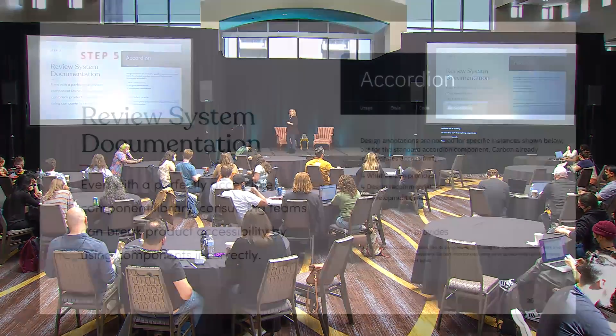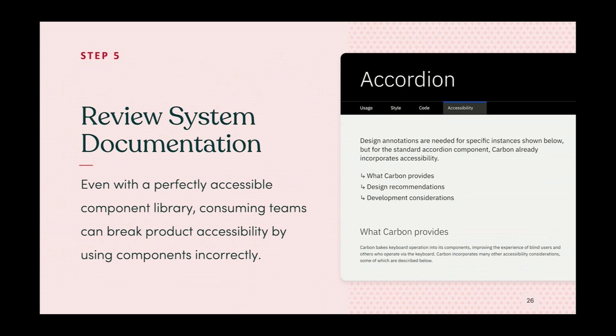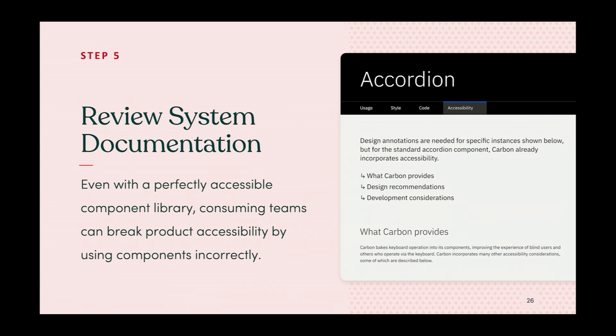Finally, review design system documentation. Even if you have a perfectly accessible system out of the box, if people don't know how to use it, they can break the accessibility of their product. Our documentation has to support people as much as possible. You can't just rely on documentation — you've got to have conversations and train people up, because a lot of us haven't been educated about accessibility by default.